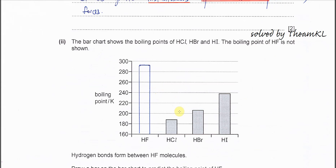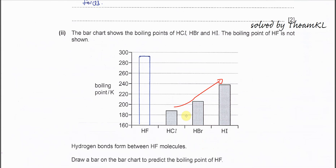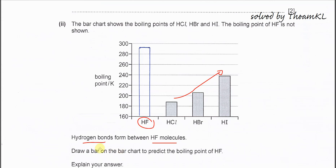Part 2. The bar chart shows HCl, HBr, and HI boiling points. The boiling point increases. Now another one is HF. Already given HF molecules form hydrogen bonds. Draw a bar on the bar chart to predict the boiling point of HF. You just draw as long as it is higher than HI, because we know that hydrogen bonds is much stronger than PDPD and IDID. That's why you have to draw something like this.